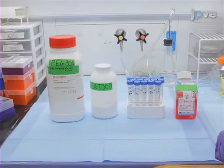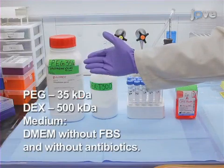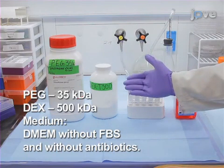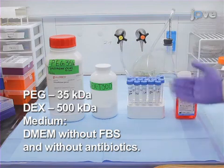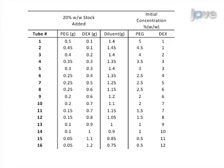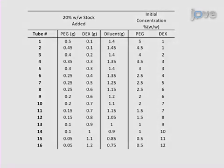Begin by dissolving the two different polymers into the specific medium that will be used in your experiments. In this example, polyethylene glycol, also known as PEG, and dextrin, also known as DEX, have molecular weights of 35 kilodaltons and 500 kilodaltons, respectively. Prepare 16 2-milliliter samples in 15-milliliter conical tubes, each with different concentrations of PEG and DEX.